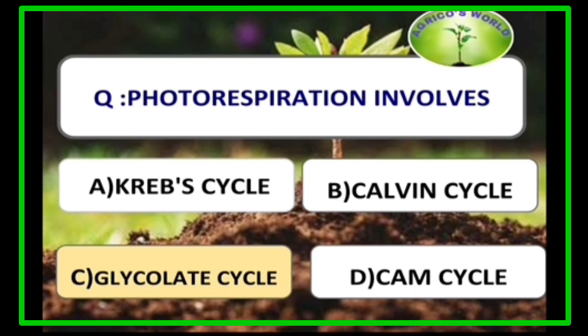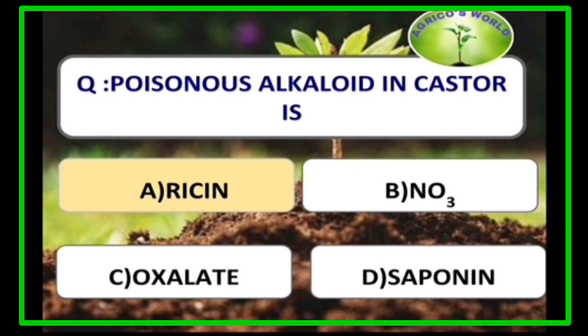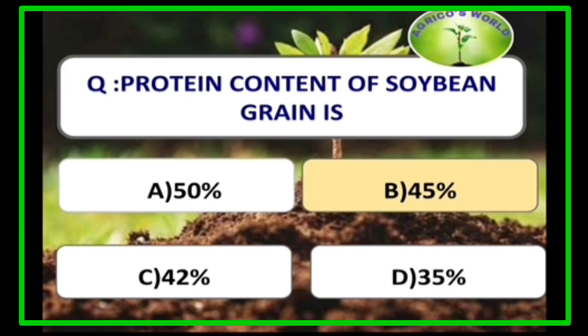Photorespiration involves the glycolate cycle, also called the C2 cycle. It mainly occurs in C3 plants but not in C4 plants. Maize, sorghum, and sugarcane are all C4 plants. The poisonous alkaloid in castor is ricin, the deadliest poison of plant origin. Protein content of soybean grain is 45%, whereas oil content is 20%.